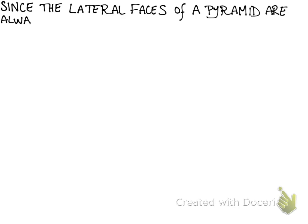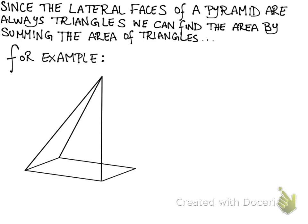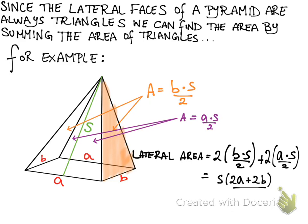Since the lateral faces of a pyramid are always triangles, we can find the area by summing the area of triangles. For example, given this pyramid with base A and B and slant height S, the area of the triangles are base times height divided by 2. There's two different bases—one of the bases is B, one of the bases is A—so the lateral area is